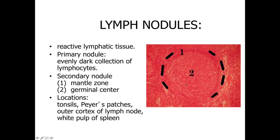To the inside of that mantle zone, we're going to have a lighter staining appearance — still lots of basophilic staining because we can see the nuclei of all these B lymphocytes — but lighter than the densely packed lymphocytes in the mantle, because these cells have become activated. They're larger cells with more cytoplasm, involved with producing antibodies because they've been activated in response to a potential pathogen. Lymph nodules are found in the Peyer's patches of the intestines, in the tonsils, as well as within larger organs like the lymph node and the white pulp of the spleen.